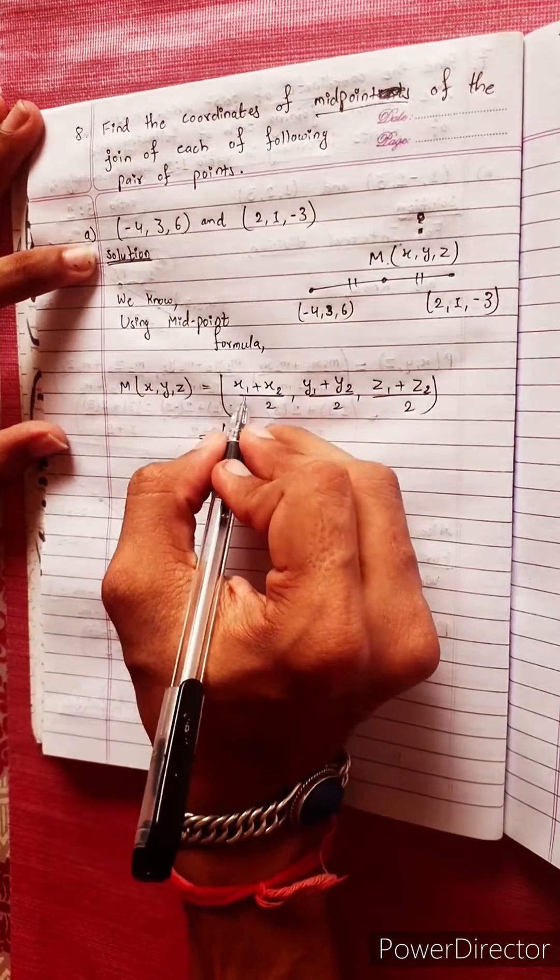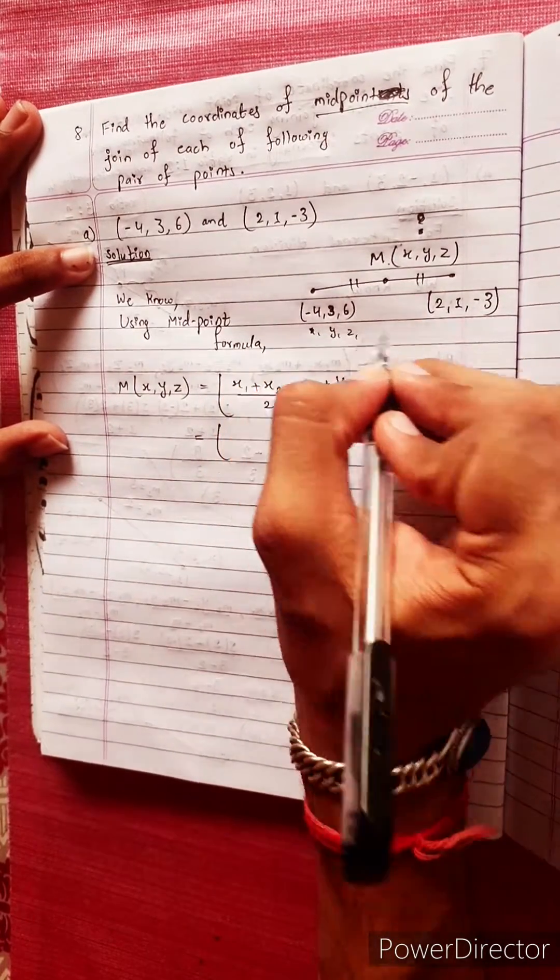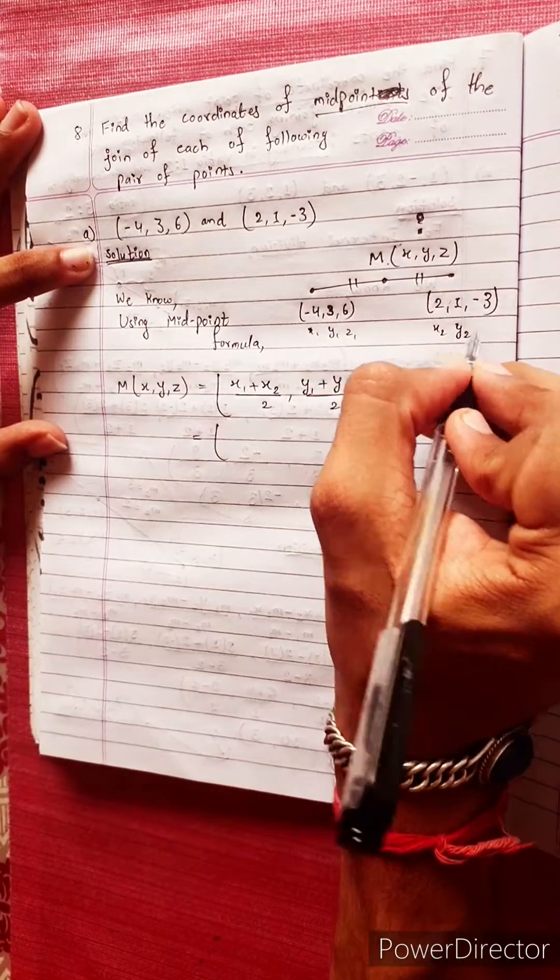Equals to, where X1, Y1, Z1 are elements from the first point, and X2, Y2, Z2 are elements from the second point.